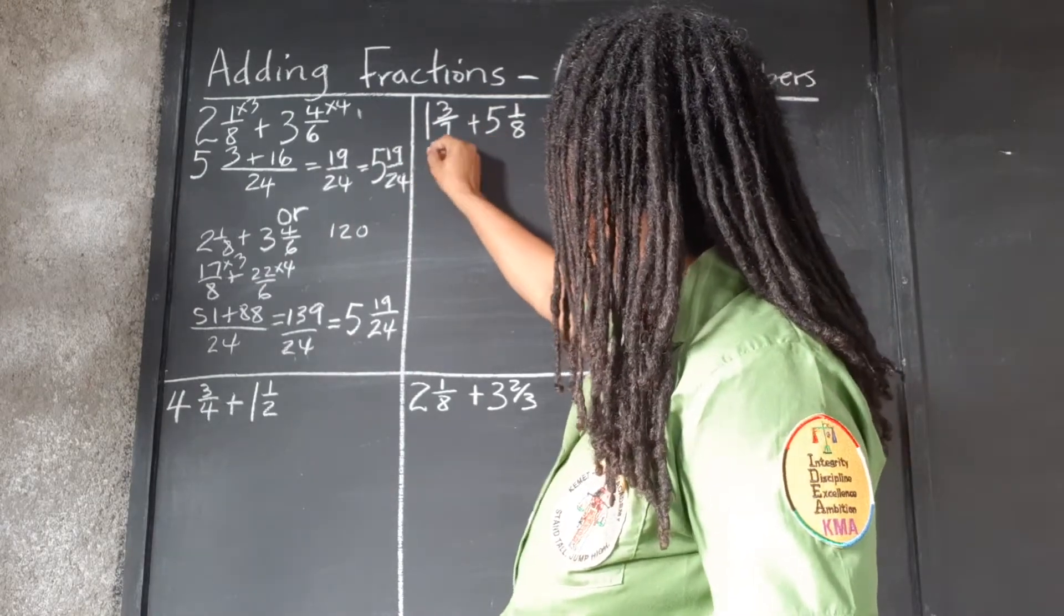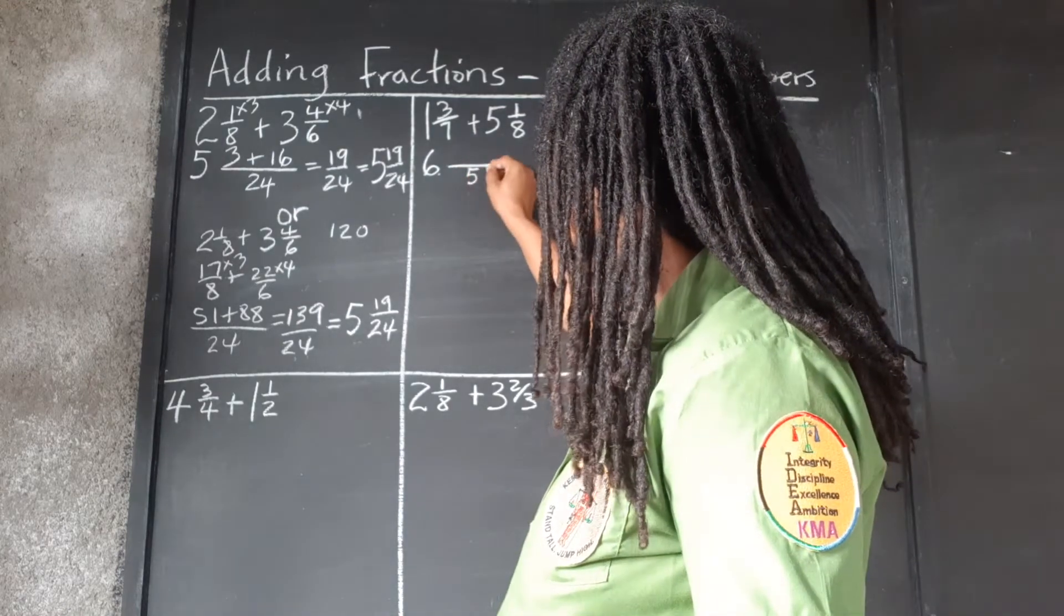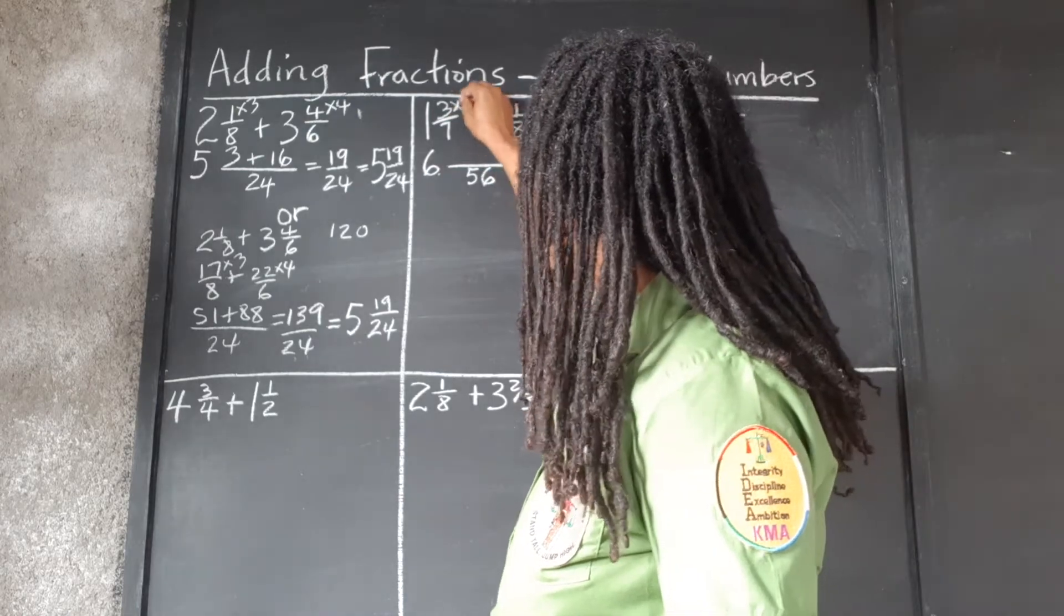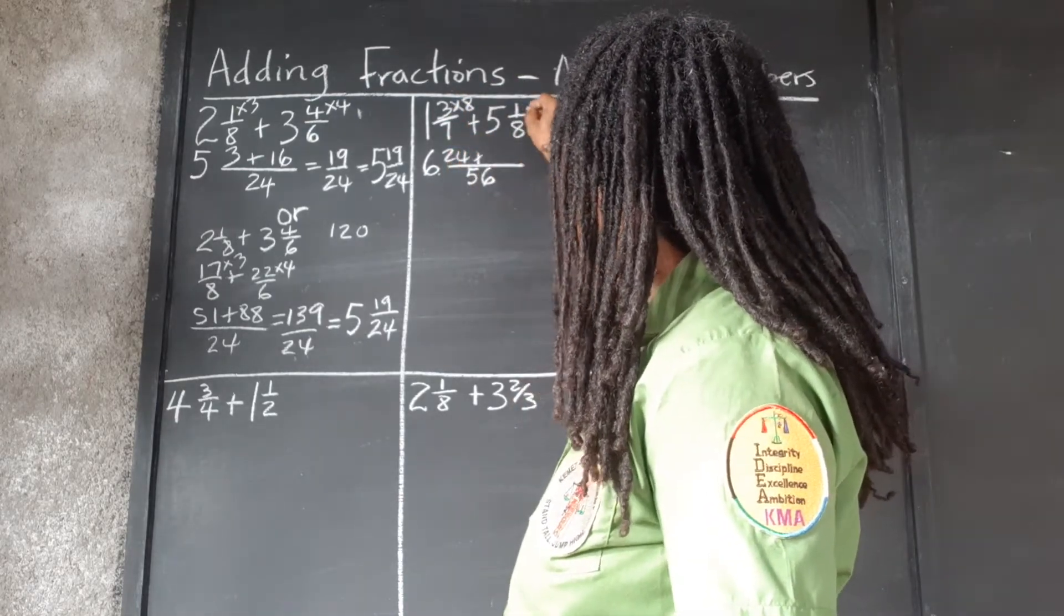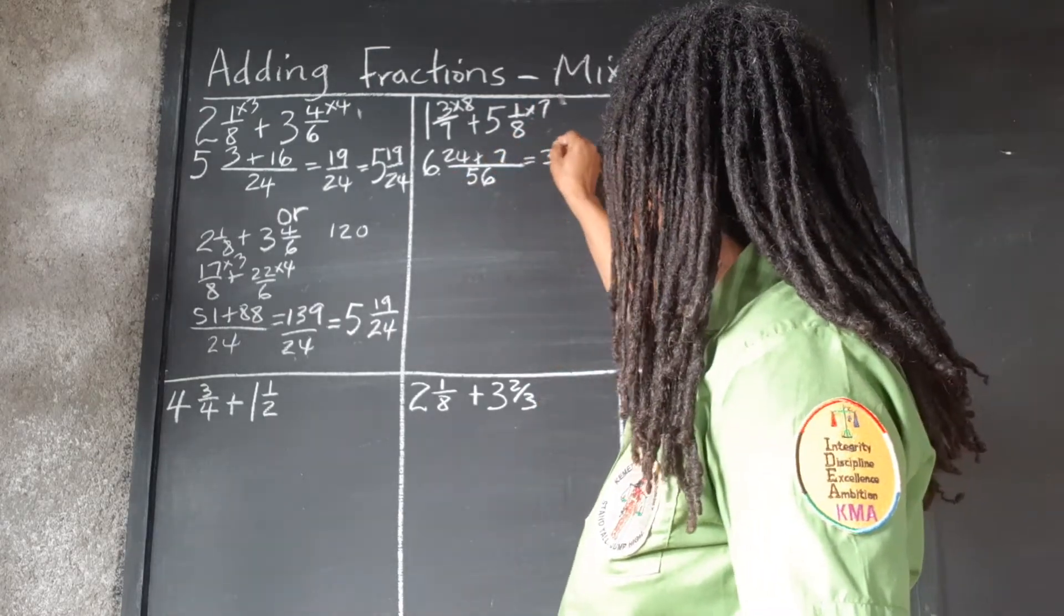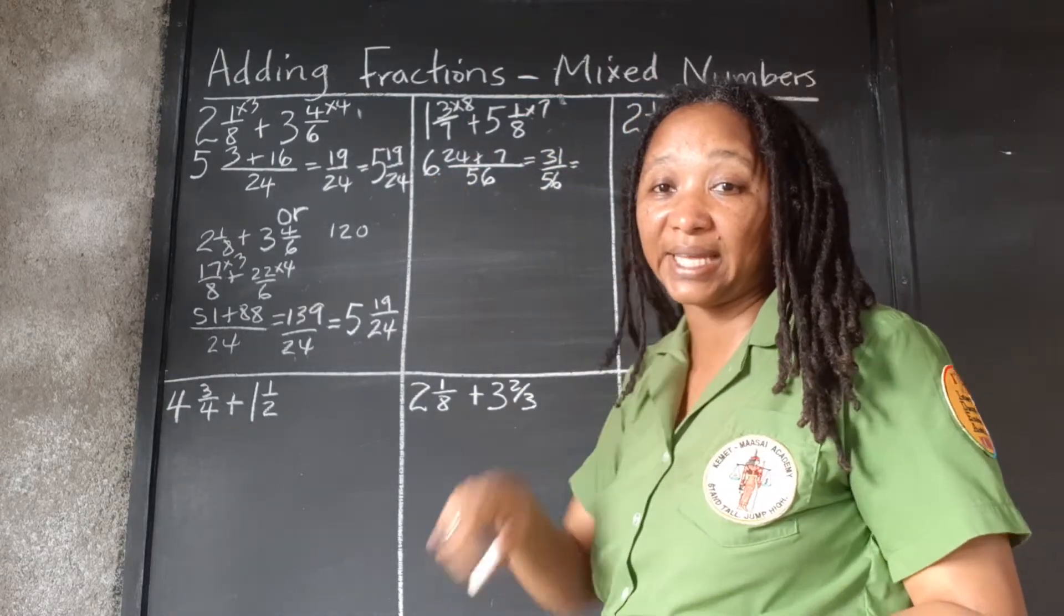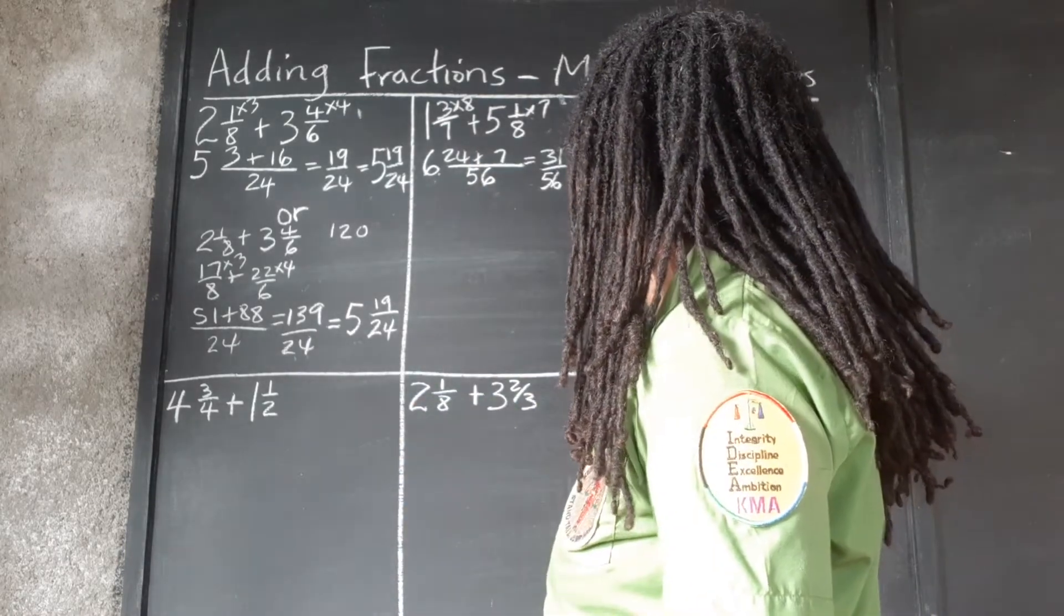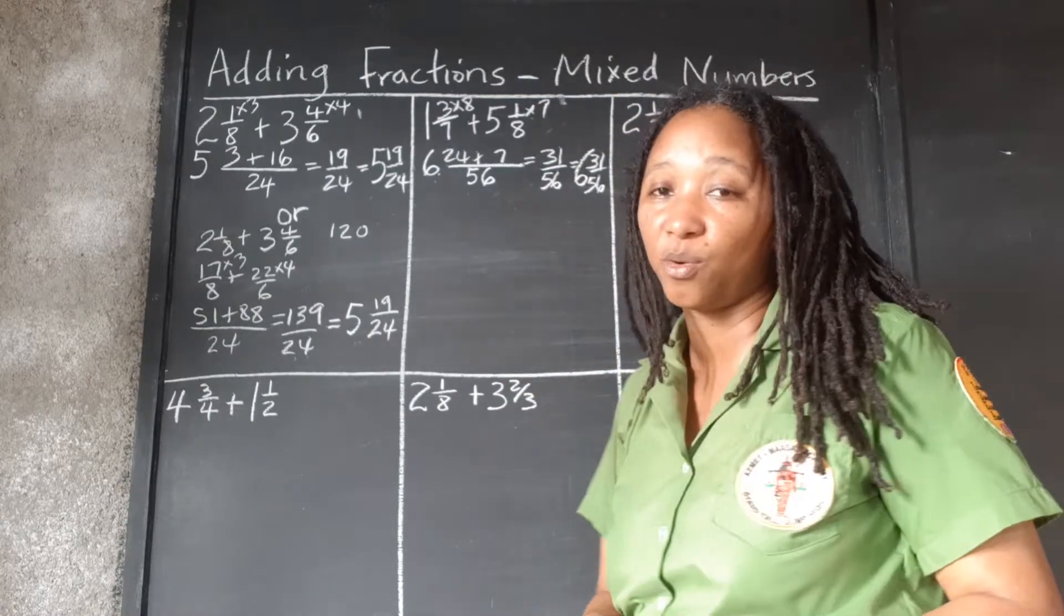So let's try this one using the first method. We add the 1 and the 5, we get 6. LCM of 7 and 8 is 56. 7 goes into 56 8 times. 3 times 8, 24. 8 goes into 56 7 times. 1 times 7 is 7. 24 plus 7 is 31 over 56. And now we remember to put the 6 that we had added and put to the side. So it's 6 and 31 over 56.